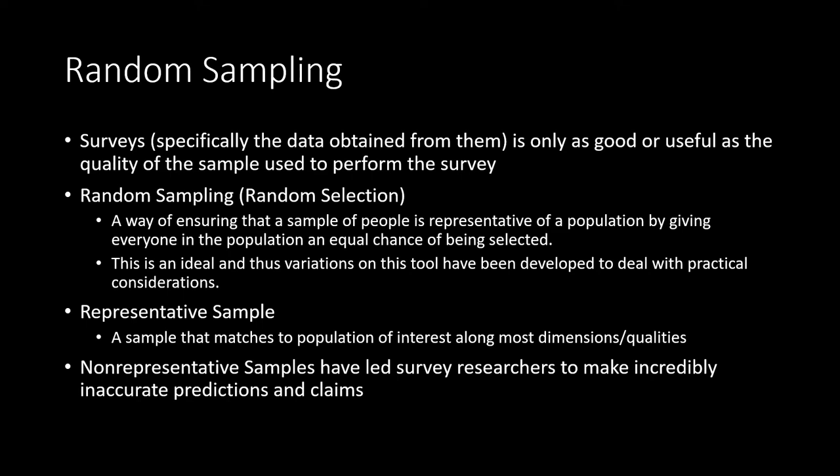Here we have something called random sampling, which is used to allow us to get closer to a representative sample. In fact, there are many historical examples of how data acquired through surveys have been grossly inaccurate — there's an interesting illustration in your textbook about how a certain magazine got it horribly wrong when predicting who would be the next president, and many of us saw something like this in the previous election cycle. Random sampling or random selection is a way of ensuring that a sample of people is representative of a population by giving everyone an equal chance of being selected — though this is an ideal, and variations have been developed to deal with practical considerations.